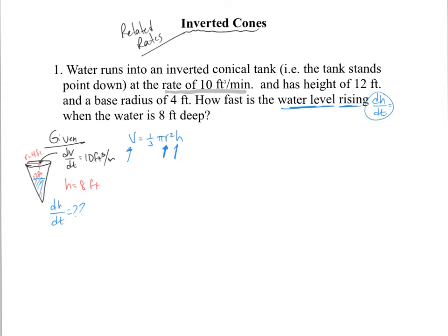We're going to use a trick. On cones, the sides are proportional, so we can take a cross-section and get a triangle. The full cone has radius 4 and height 12, and there's a similar triangle inside with radius r and height h. We want to find that ratio so that when there's 8 feet of water, we can find dh/dt. Ultimately, we want to eliminate one of the two variables.